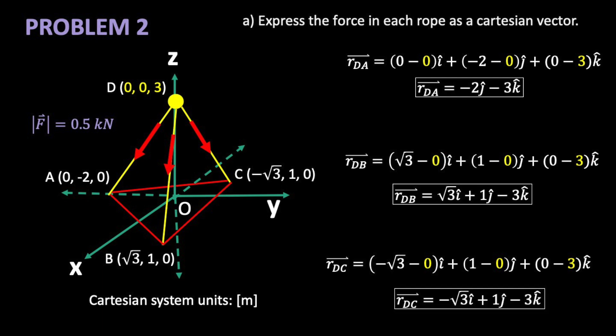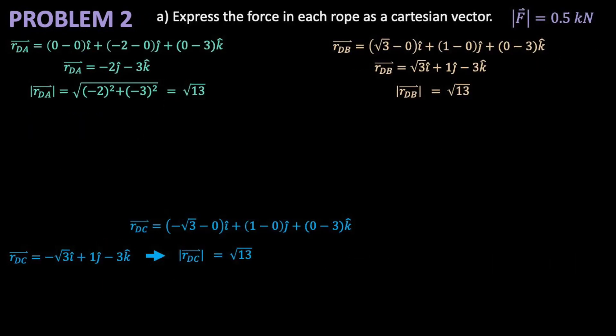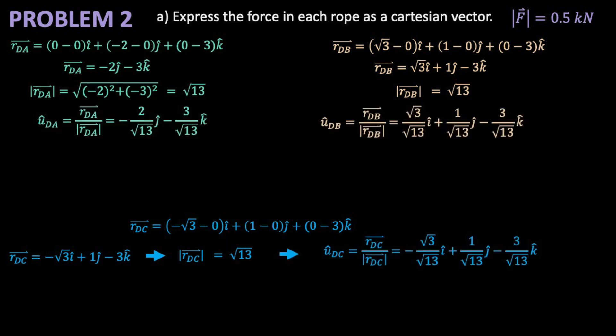First, we find the position vectors for each rope. Then, their magnitudes. We were told in the problem statement that all three ropes had the same length. So, we really only needed to calculate this once. Then, divide each term by the length to get our unit vectors. These steps are getting repetitive, so using Excel could save you time. Just make sure you could do them by hand to quickly practice for a test.